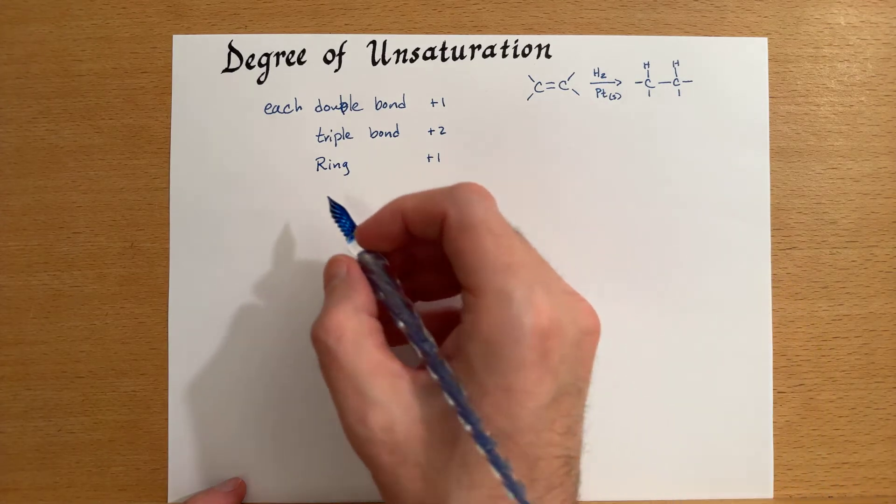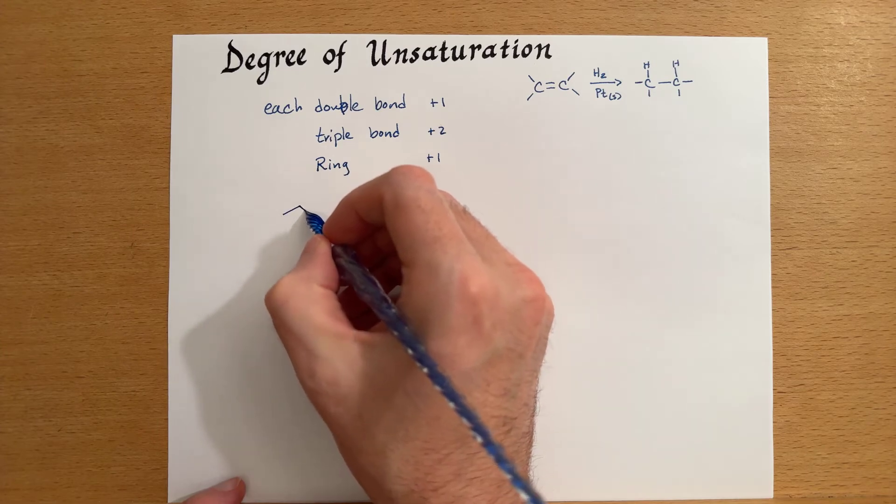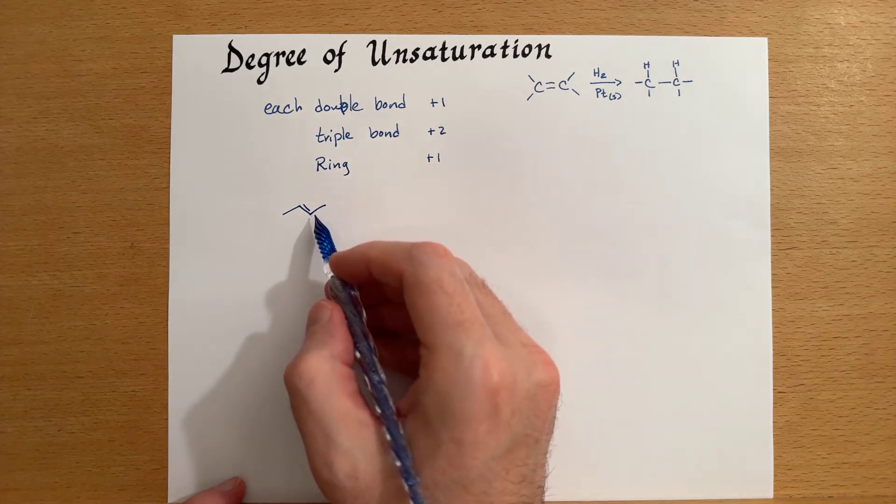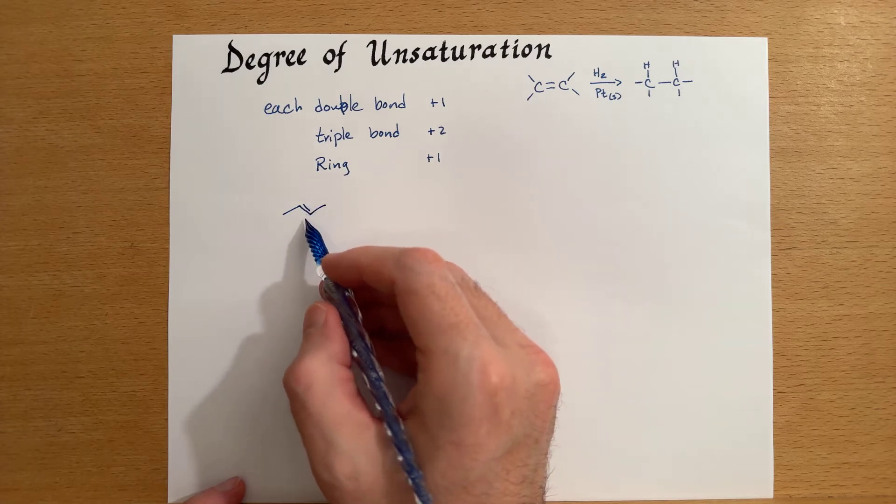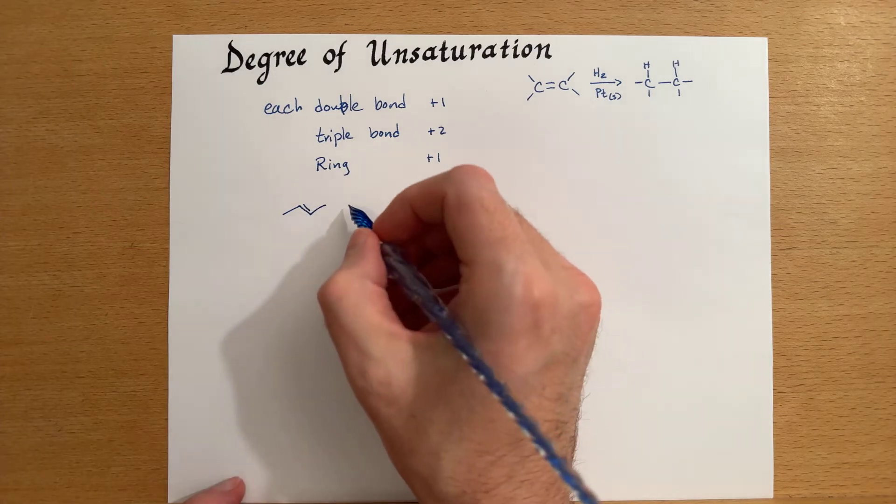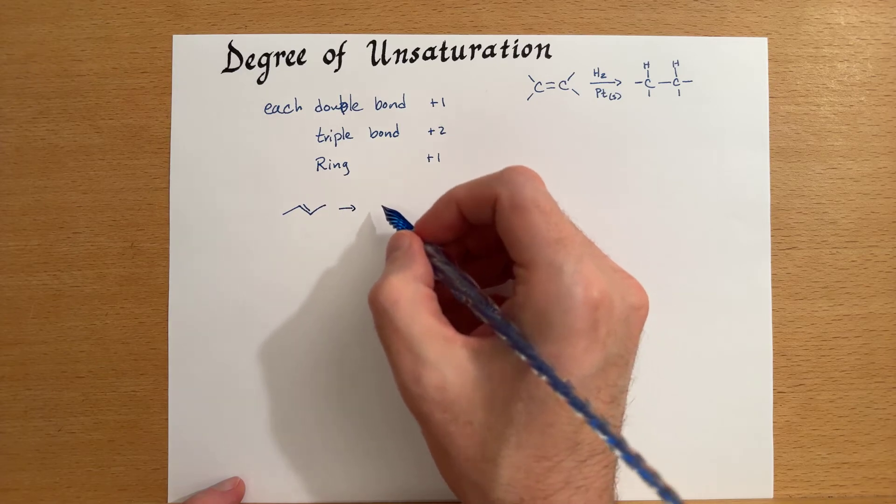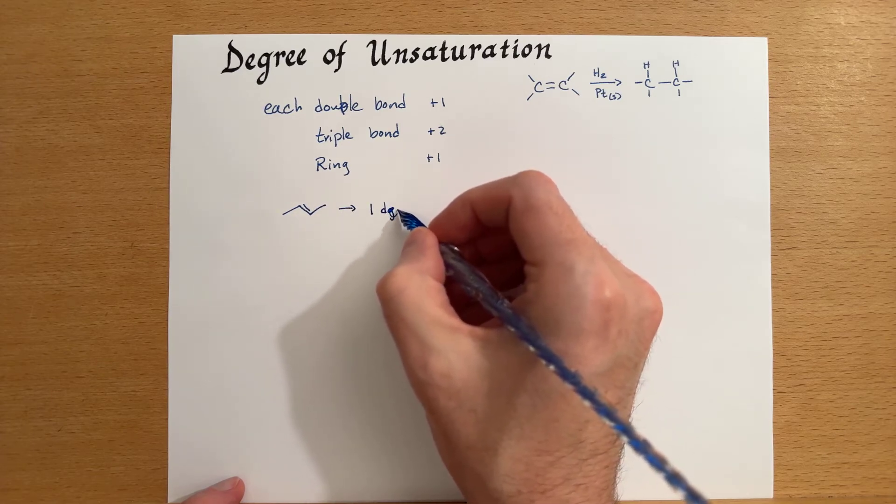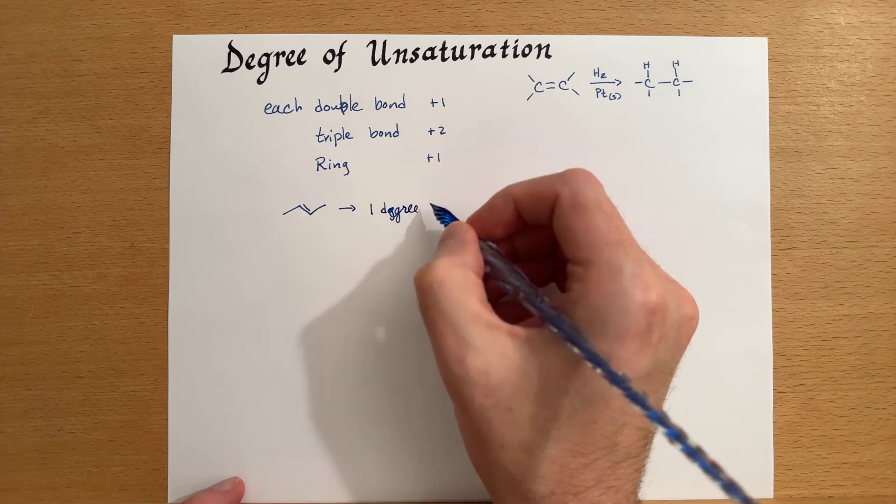So let's look at some examples. We have a butene. This has a single double bond in it. So therefore, it has one degree of unsaturation.